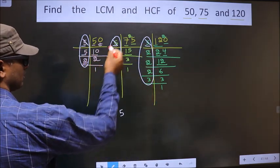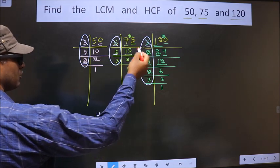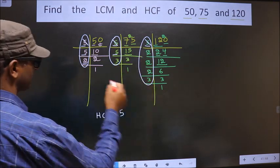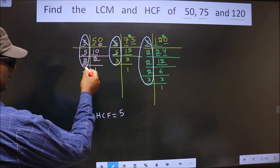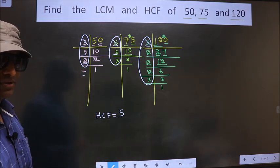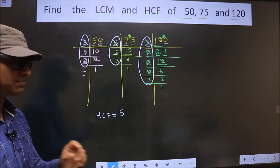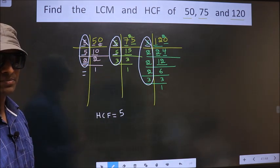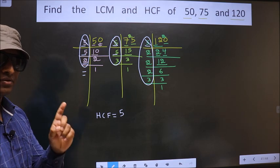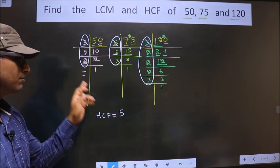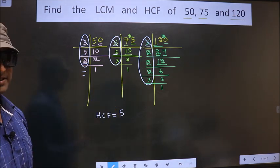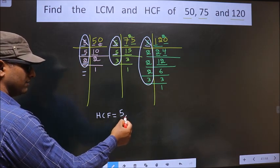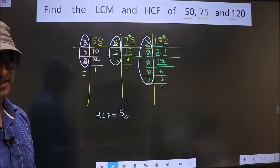Next number is 2. Do we have 2 here? No. So no need to check in the other place. Here no more numbers are left. Therefore, we have only one number 5 present in all the 3 places. So this itself is our HCF.